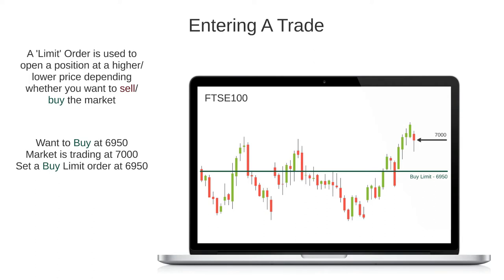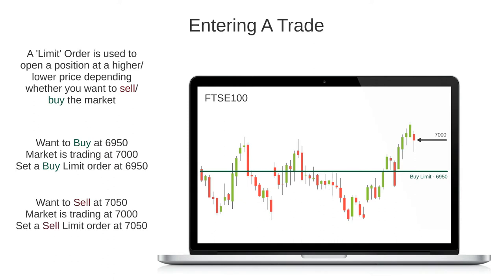Alternatively, if I wanted to open a sell position at 7,050 and the current price was 7,000, I could set a sell limit order at 7,050 and my broker would enter me into a sell position if the market climbs to 7,050. These orders usually stay valid until they are either executed by the broker or cancelled by the trader, but you can set other expiry criteria if you wanted.